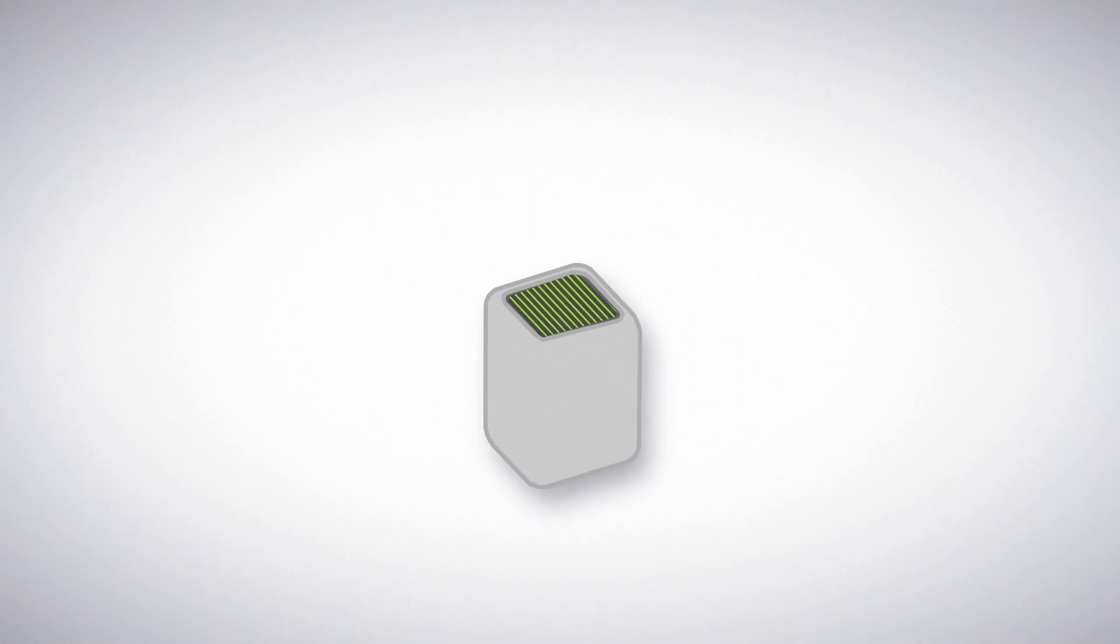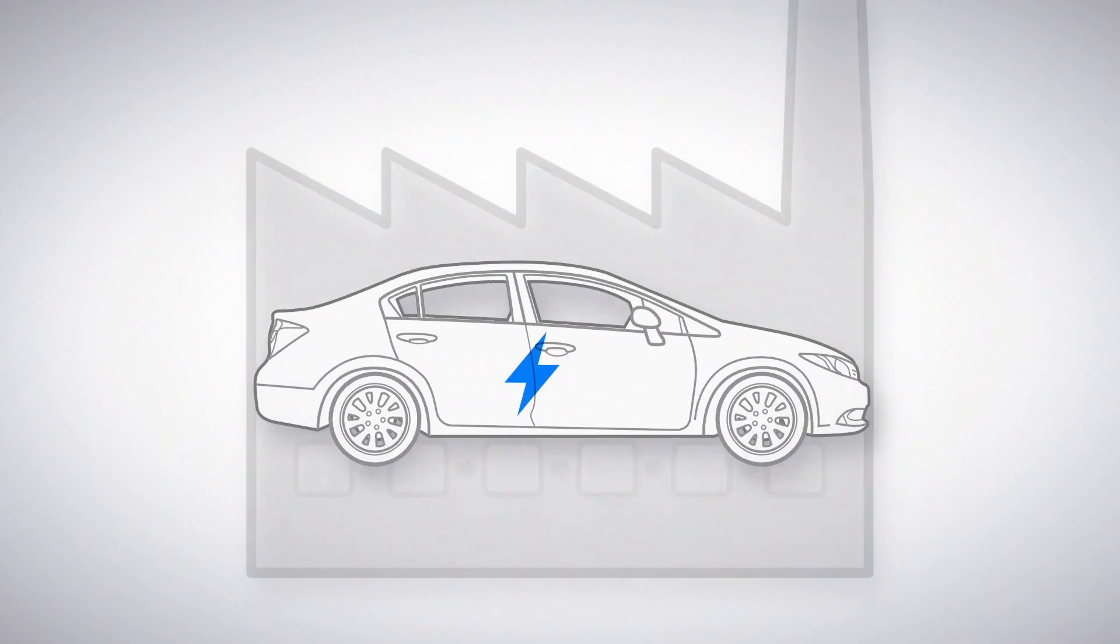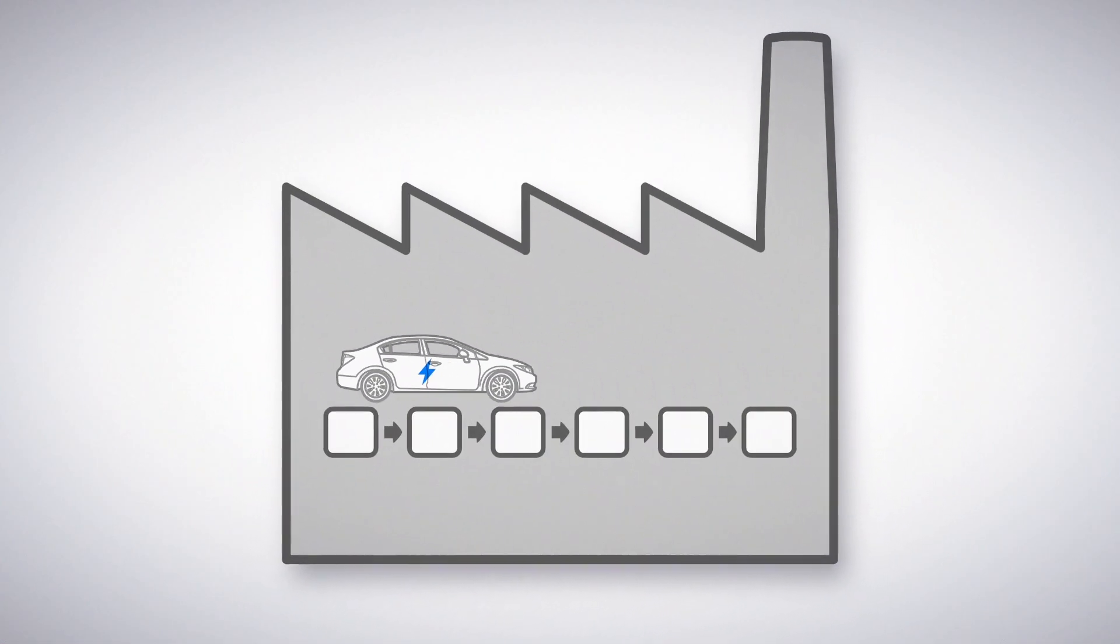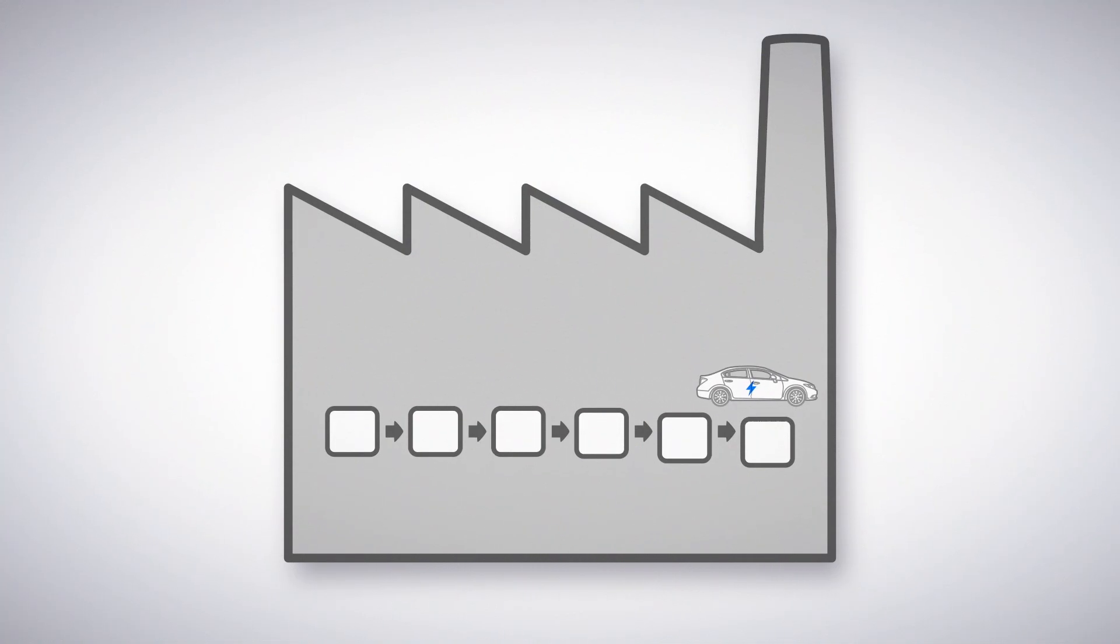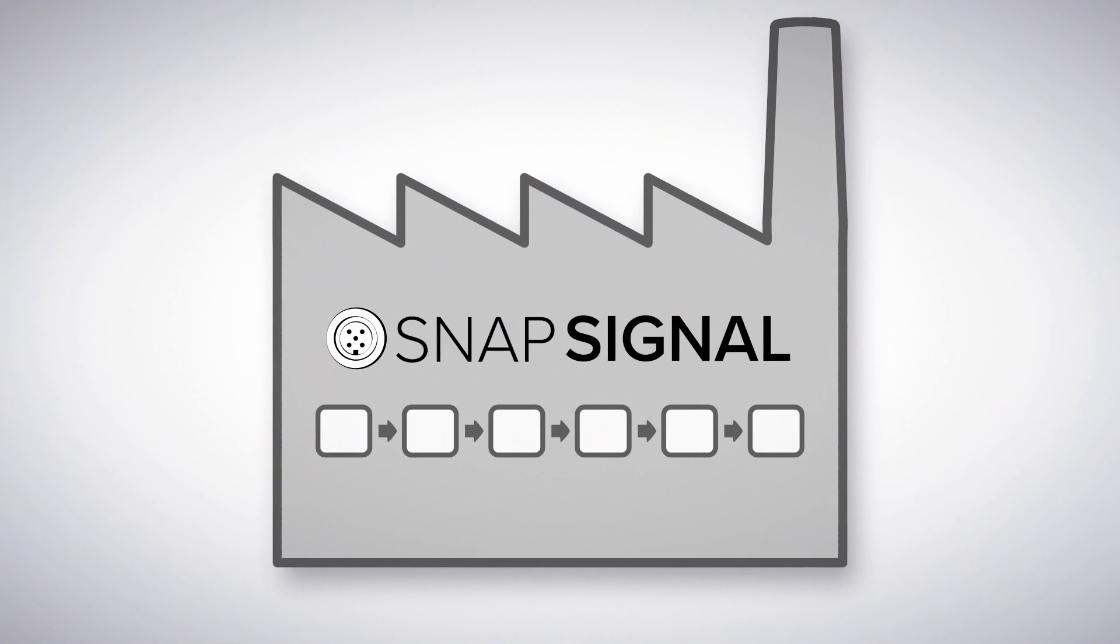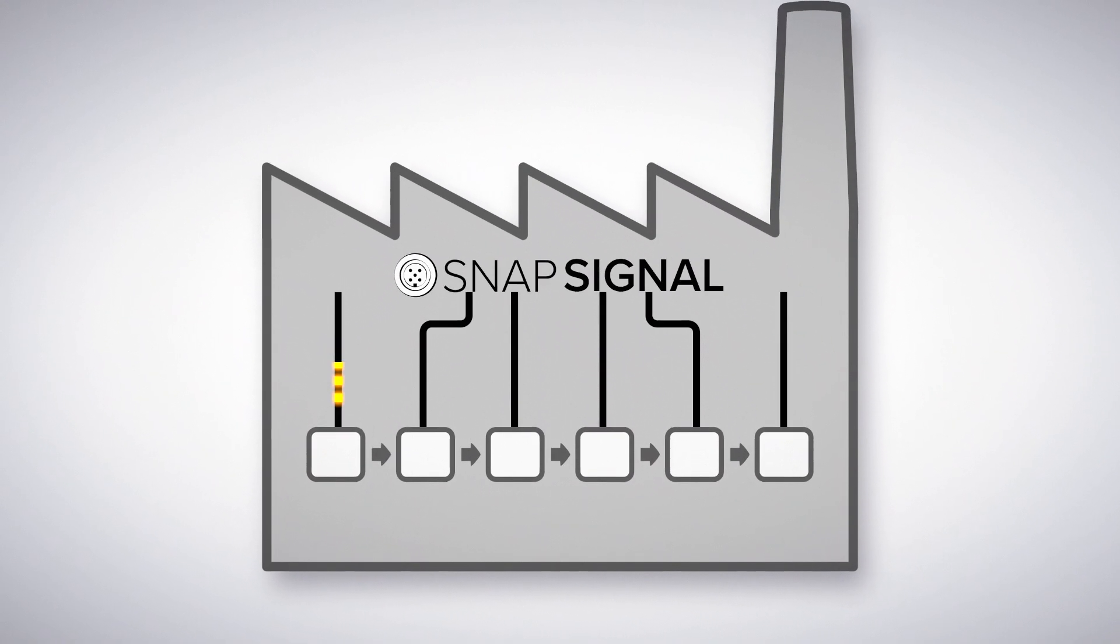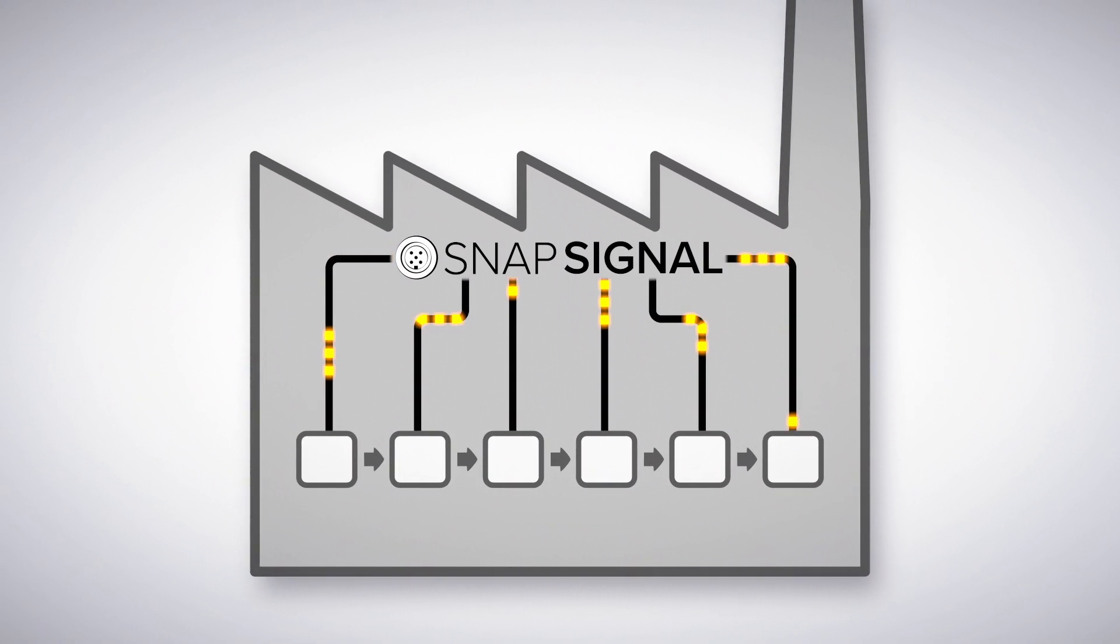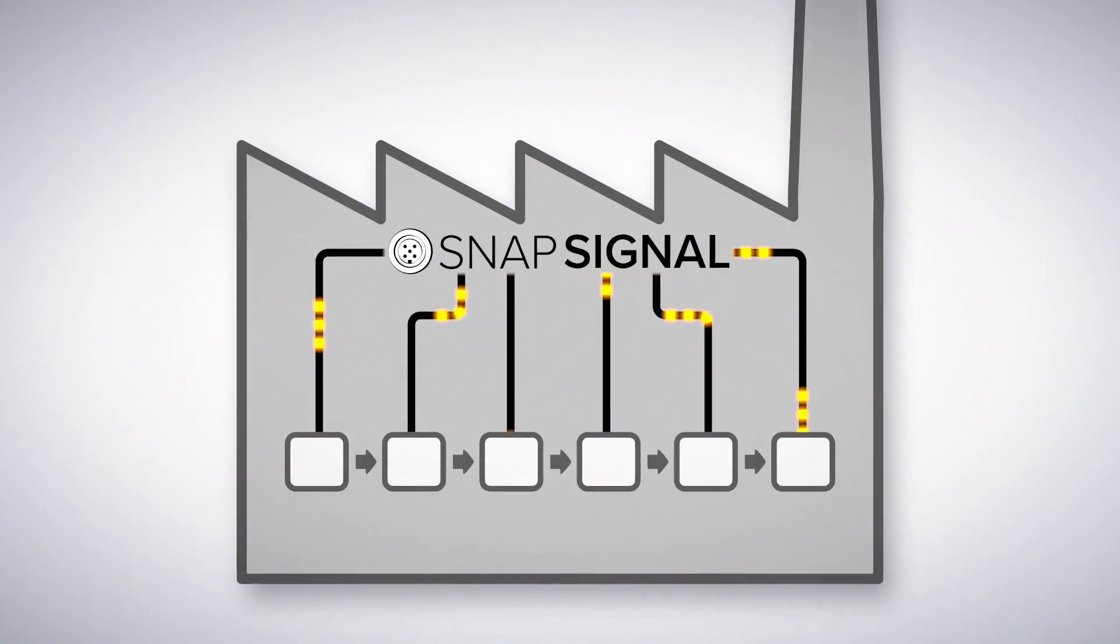Smart vehicles should be made in a smart factory, and that starts with easy access to actionable data. Banner's SnapSignal IIoT overlay network can be easily added to new or existing equipment to access multiple data sources without disturbing existing control systems.